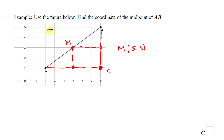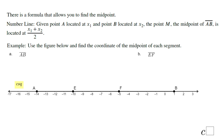This next thing is very important to remember: this is the formula on a number line to find the midpoint. Let's take a look at this example — use the figure below and find the coordinate of the midpoint of each segment. What will be the midpoint of segment AB? Point A is located at negative 14.